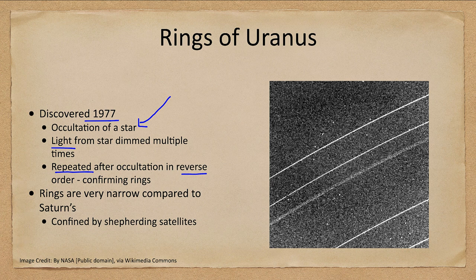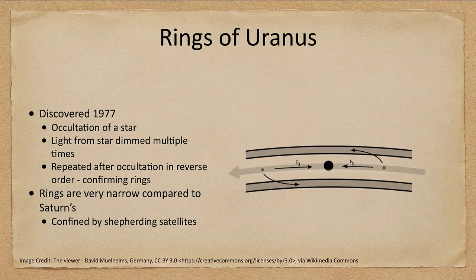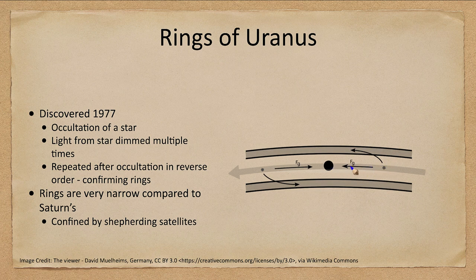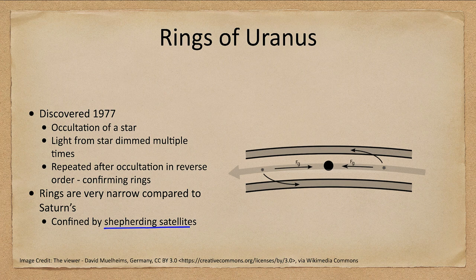These rings are very narrow compared to Saturn's, and they are confined by shepherding satellites — small satellites that orbit around and pull particles into specific rings. As particles start to deviate, the gravity of the moon will accelerate or decelerate them into a different orbit, confining them and allowing the rings to stay narrow over much longer periods of time. Over hundreds of millions of years, even with this, the rings should disperse, so we'll need to consider how rings may be replenished.